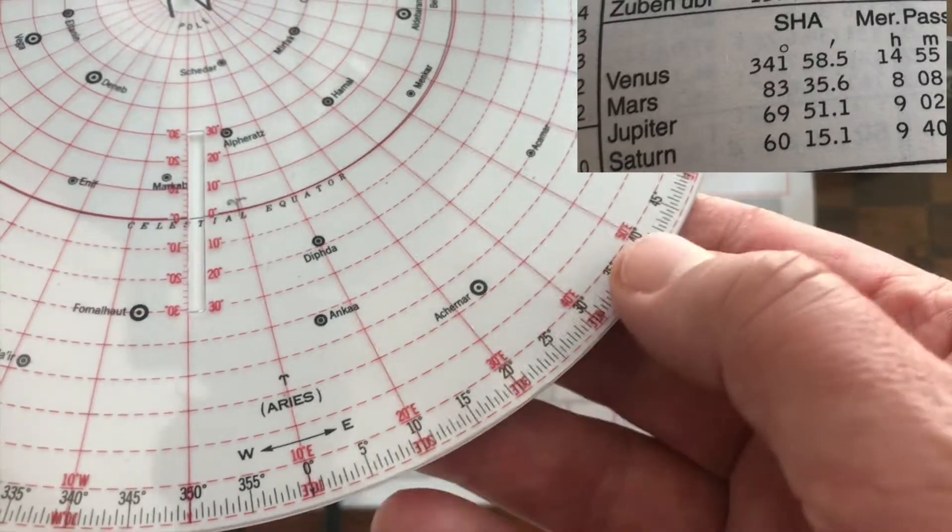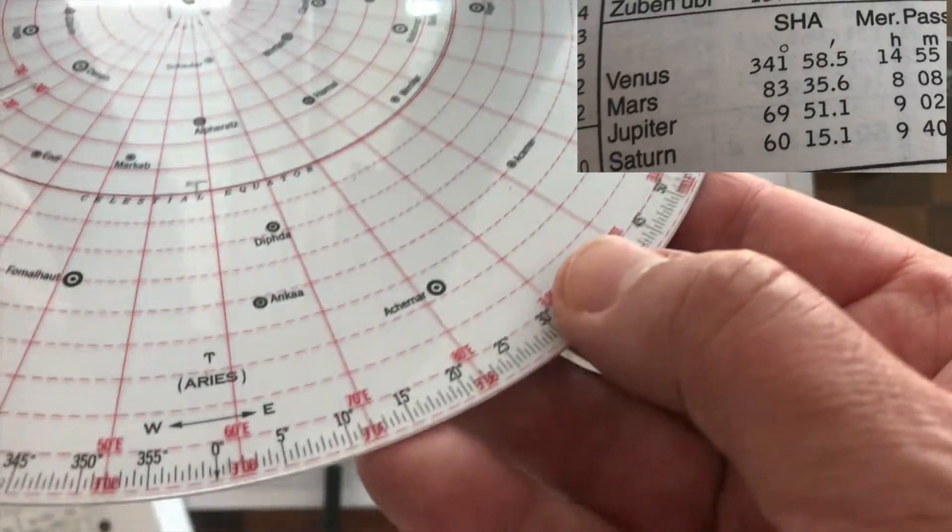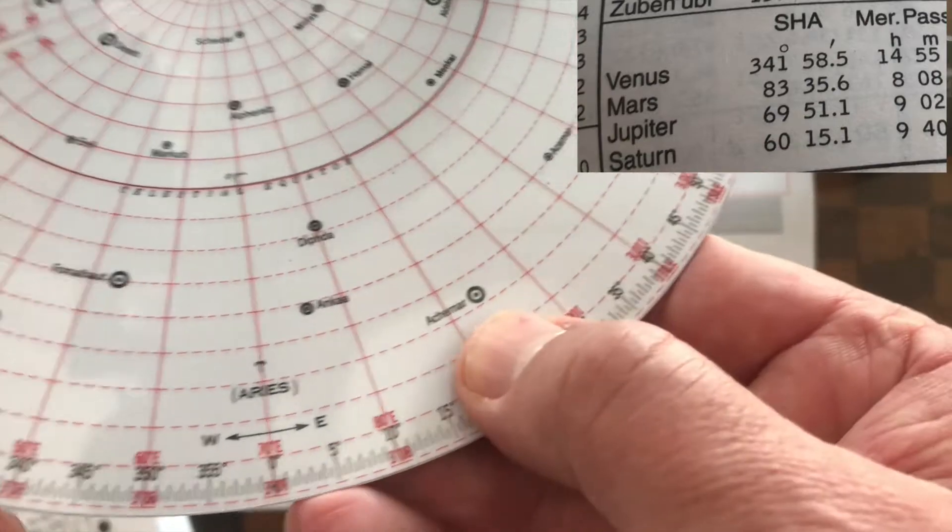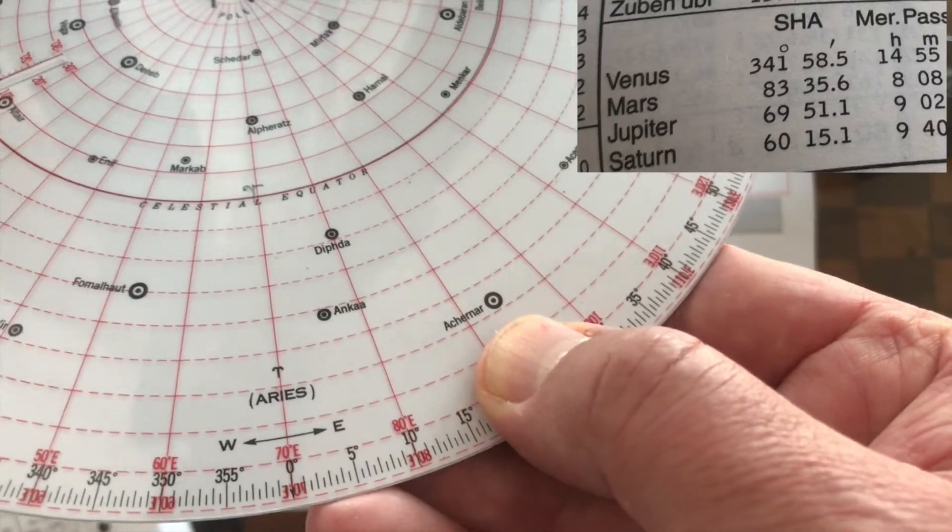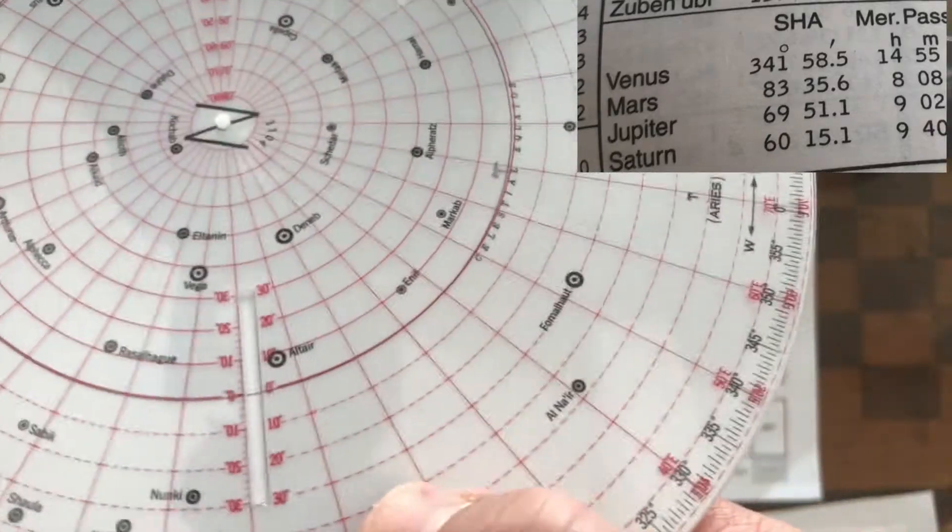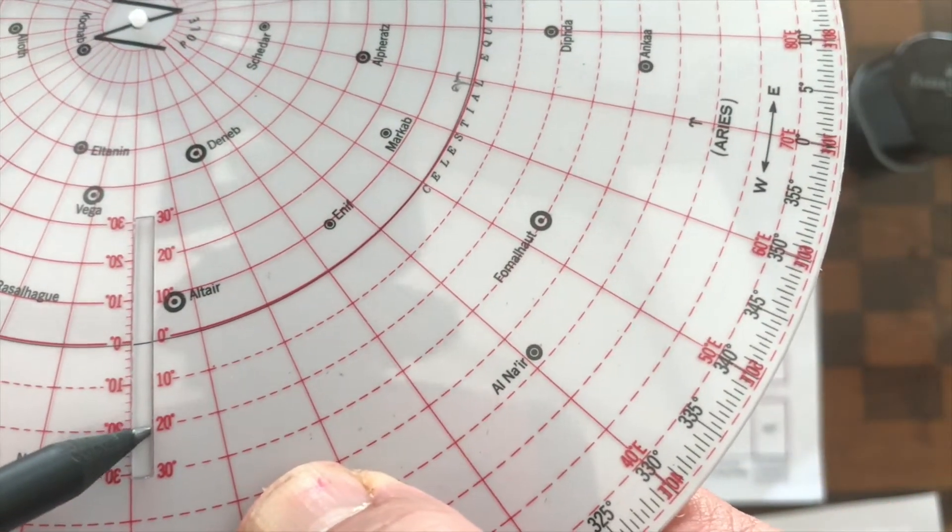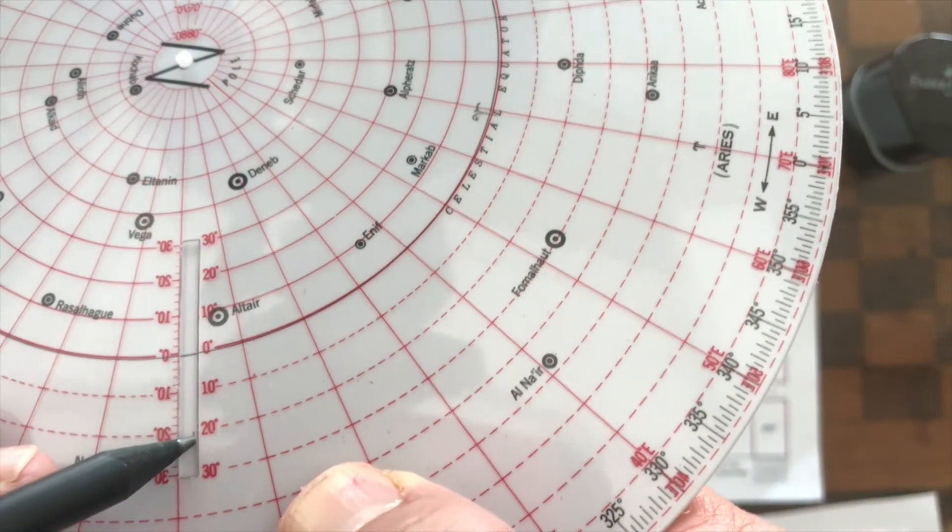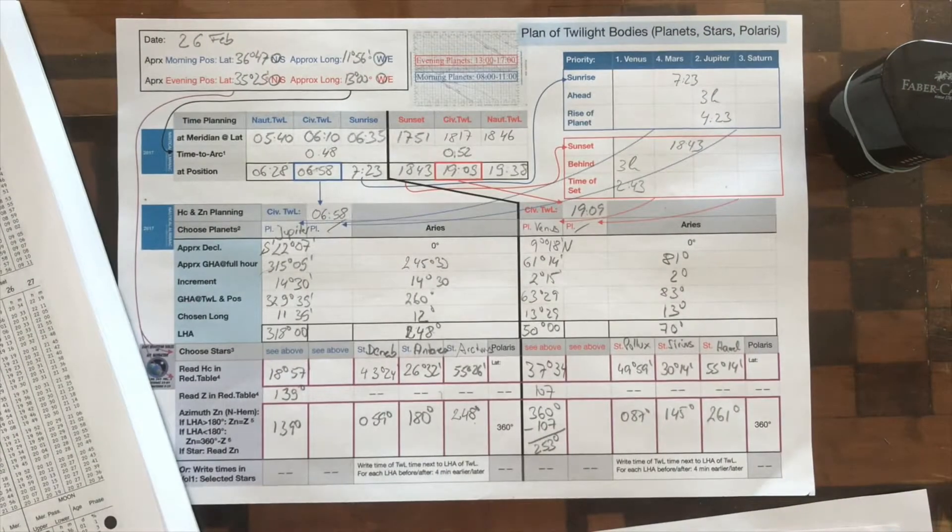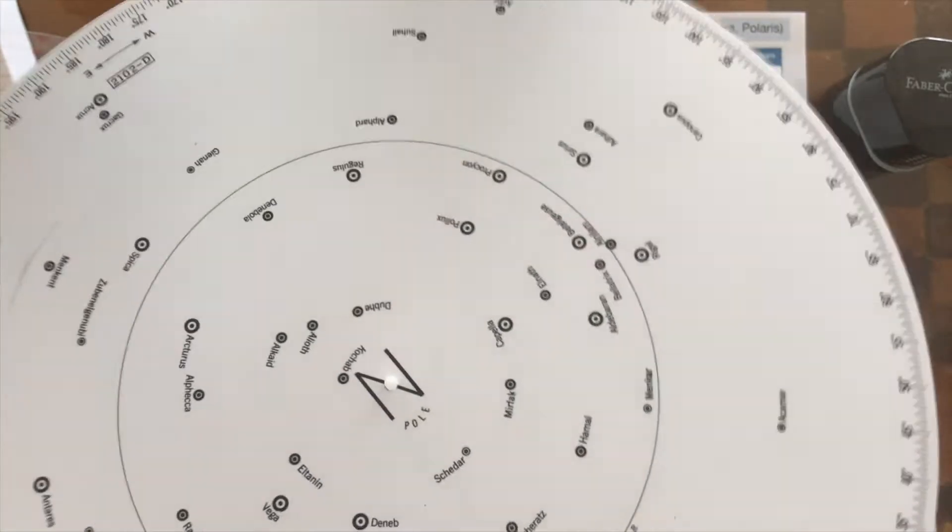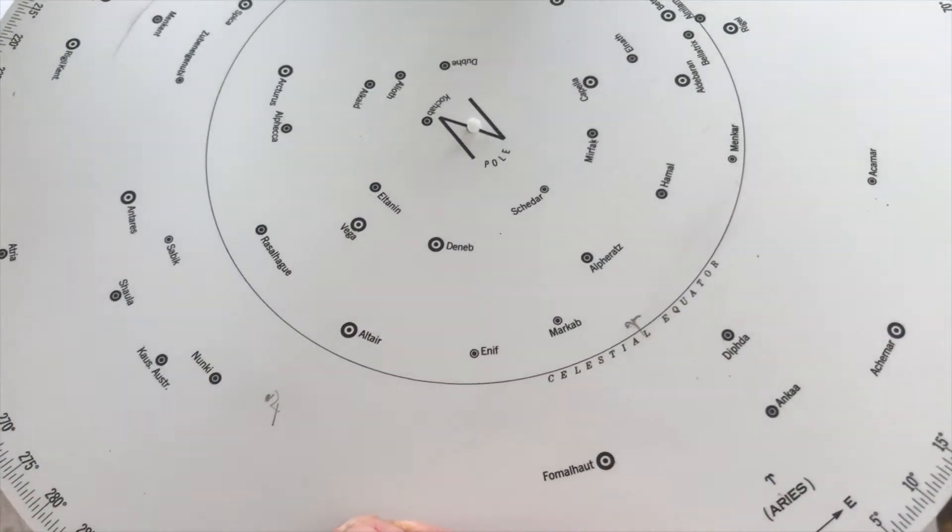We have to move this because the sidereal hour angle always goes to the west, and the sidereal hour angle of Jupiter is 70 degrees. So let's look here, go back, 0, 10, 20, 30, 40, 50, 60, 70, here. So this is the sidereal hour angle of Jupiter. Don't touch it, don't move it, and we have here the declination of 22 degrees. I make a little mark there. So this is Jupiter. So I can make a little symbol for Jupiter there, so I find it again.